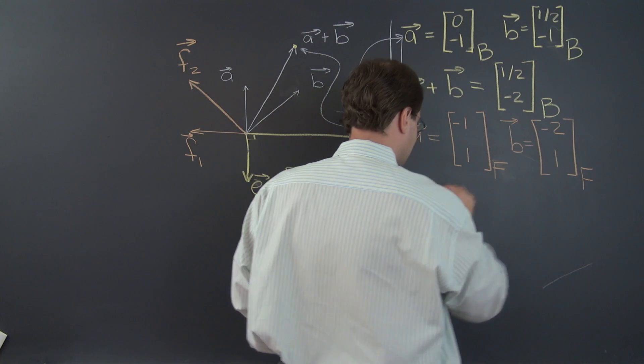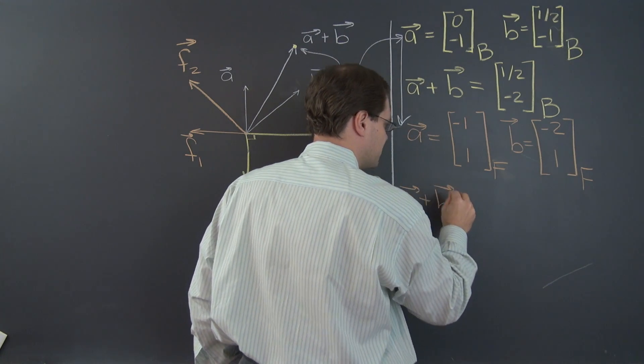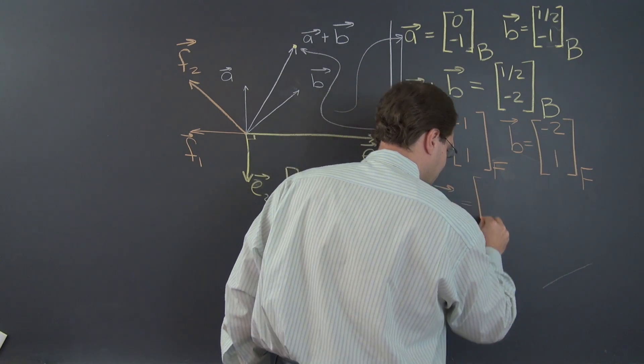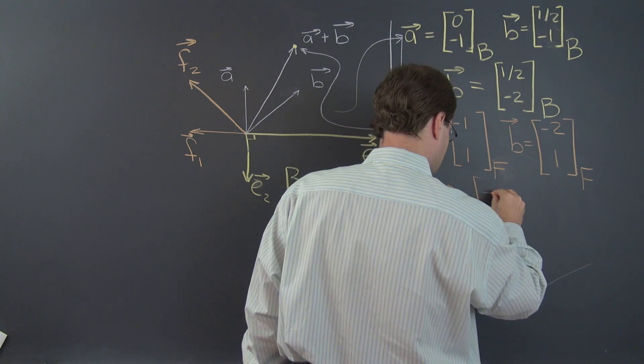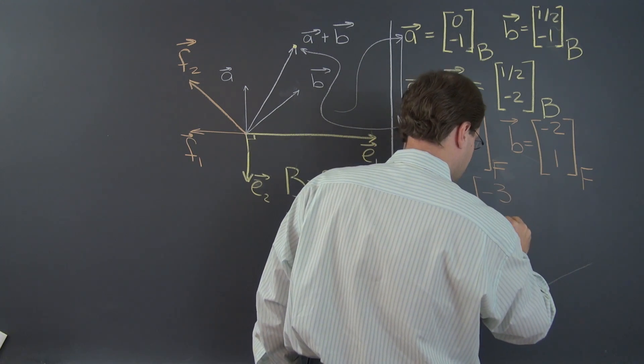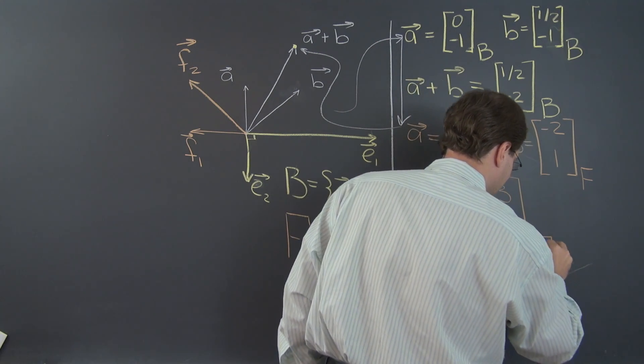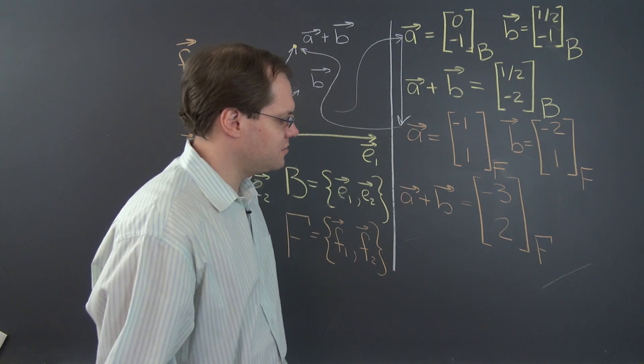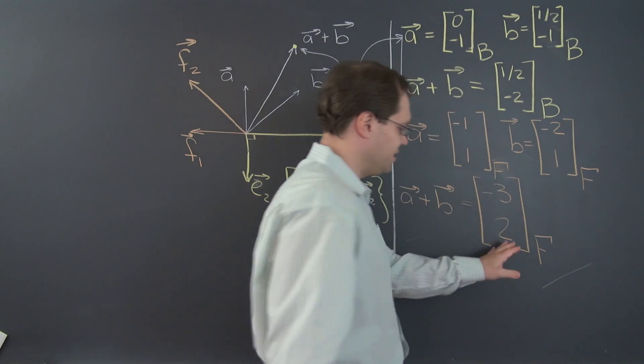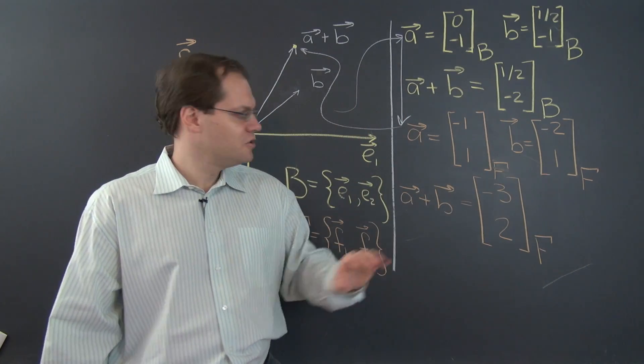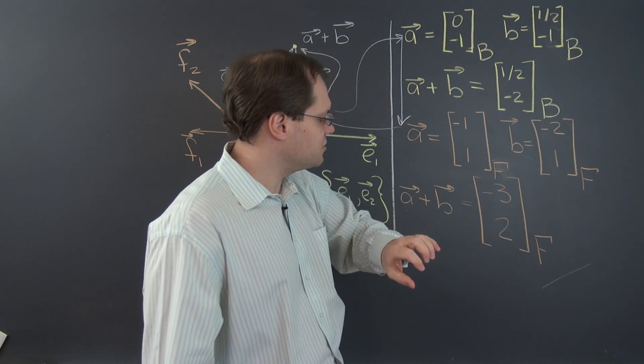And now we can do A plus B. And of course, A plus B, in this particular component space, equals minus 3, 2. With respect to the basis F. Once again, this is not the answer. These are the components of the answer. So everything's different. This vector's different. This vector's different. This vector's different. So in this case, everything's completely different.